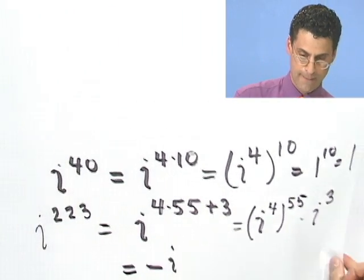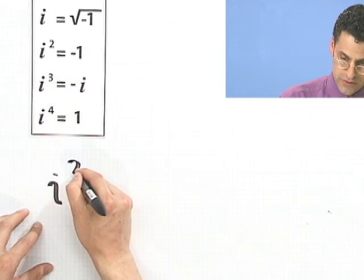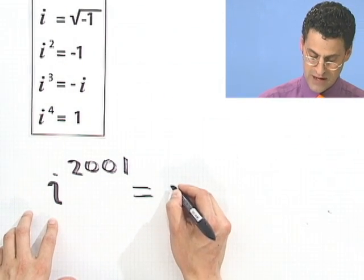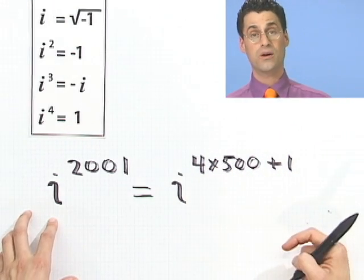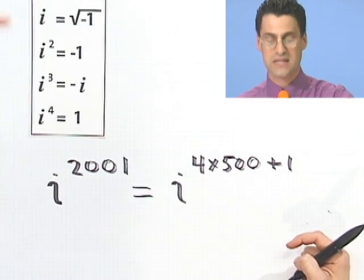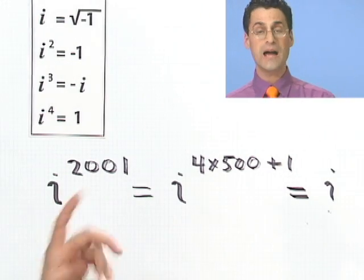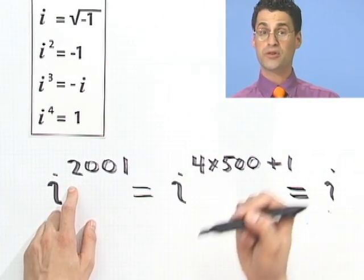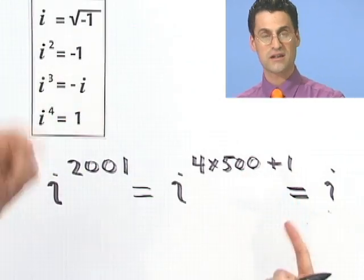So all you have to do is divide the exponent by 4 and see what the remainder is. For example, i to the 2001: if you divide by 4, you get 4 times 500 equals 2000, plus a remainder of 1. So you go through the cycle 500 times, and you end up on the first entry — so this equals i. If you have really high powers of i, not a problem. Just divide the power by 4, see what the remainder is, and that's where you land on the list.